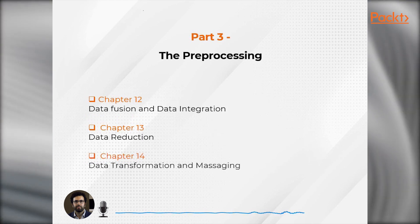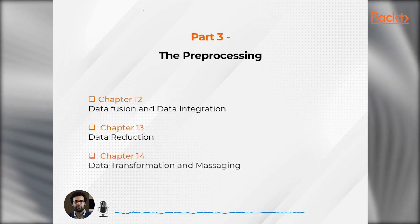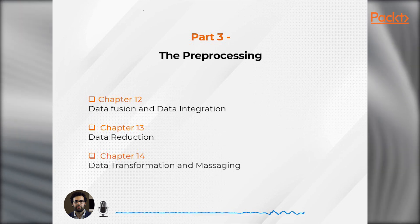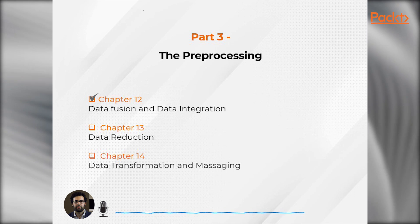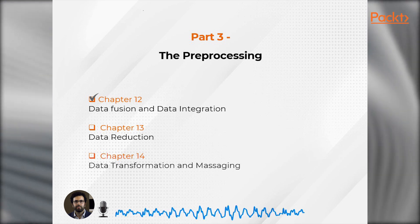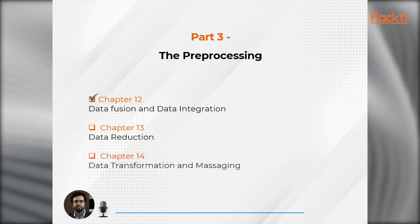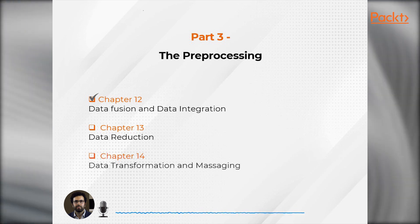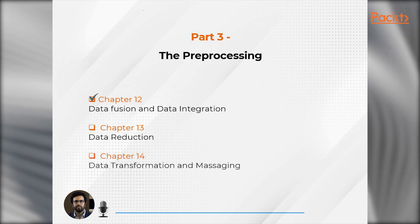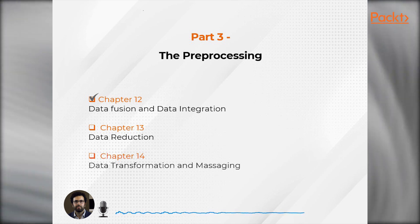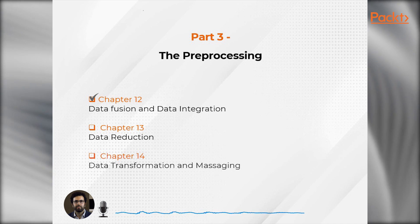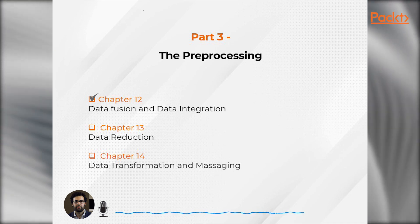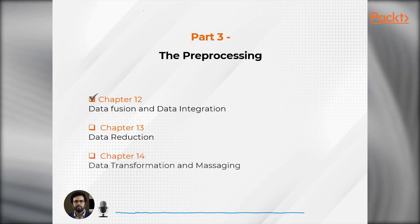Each of the other three chapters in this part covers one important step of data preprocessing. Chapter 12 covers data fusion and data integration — this step is about mixing data sources. However, this simplicity does not carry itself to implementation. Combining data sources is challenging, and Chapter 12 introduces six challenges of data integration and uses examples to show how best they can be dealt with.